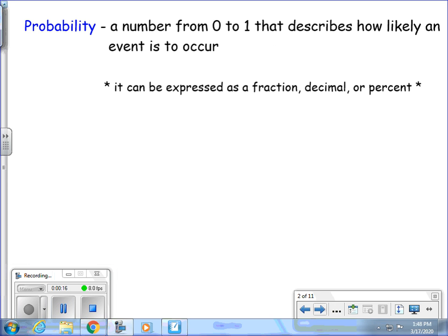Probability. A probability is a number from 0 to 1 that describes how likely an event is to occur. It can be expressed as a fraction, decimal, or percent.